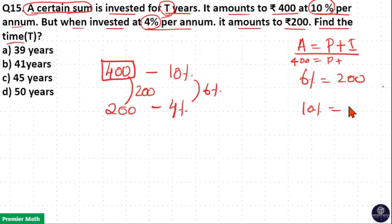So, if amount is 400 and principal is P and I is equal to 10% rate interest, then 10% is equal to 200 by 6 into 10, that is 2000 by 6. So interest here is equal to 2000 by 6.